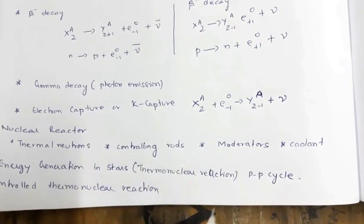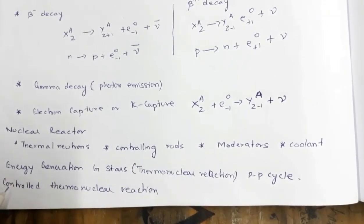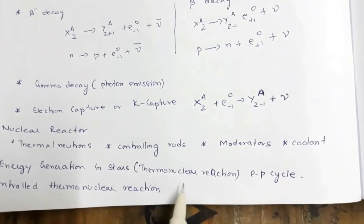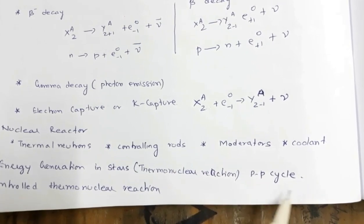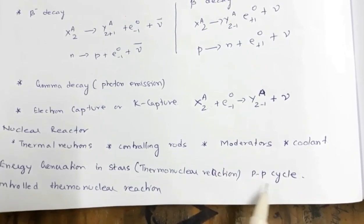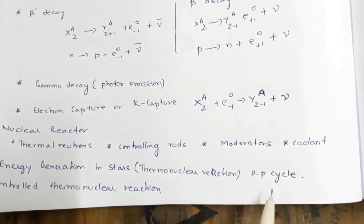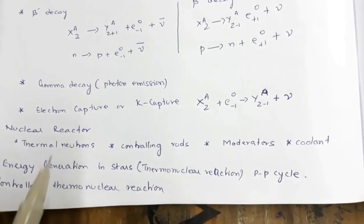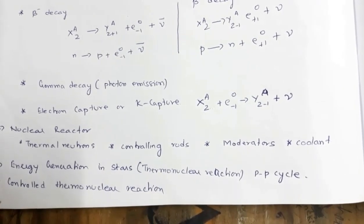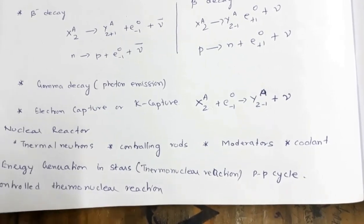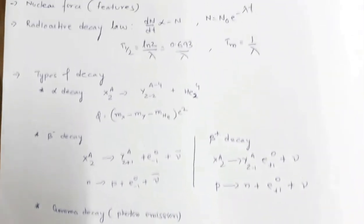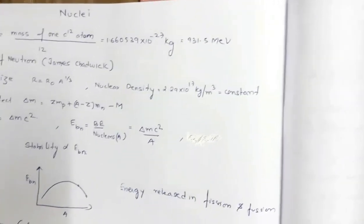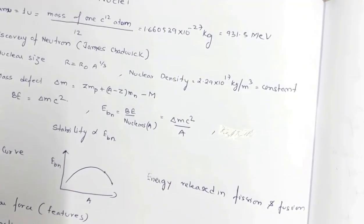Then energy generation in stars — the thermonuclear reaction, specifically the proton-proton cycle. In examinations, you may be asked to write the equations involved in the proton-proton cycle. Finally, controlled thermonuclear reactions. These are all the important points of the chapter Nuclei. Hope this video is beneficial to you — best wishes and good luck.